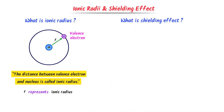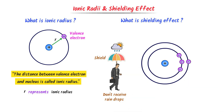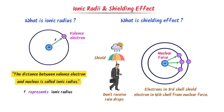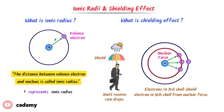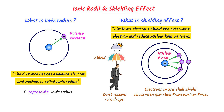Now what is the Shielding Effect? Consider a man holding an umbrella in the rain — this umbrella protects or shields the man from the rain, so the man doesn't receive any raindrops. Similarly, consider this atom: the electrons in the inner shell shield the nuclear force on the electron in the outer shell. The inner electrons act like an umbrella which decreases the nuclear force on the outermost electron.